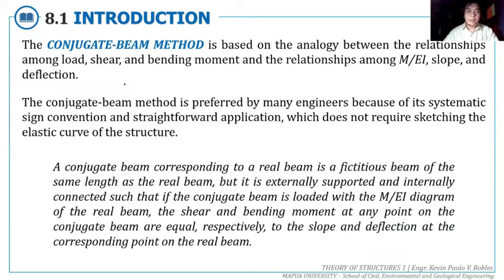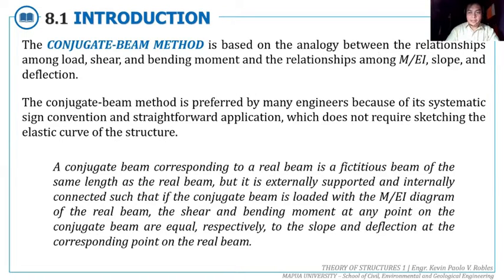If you recall, using the double integration method or the area moment method, the first thing we need to do is draw the expected elastic curve or the deflected form of the beam, because based from the elastic curve, we draw the deviations and change in slope by drawing the tangent lines. In the conjugate beam method, we don't need to draw the deflected form or the elastic curve of the beam.